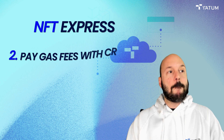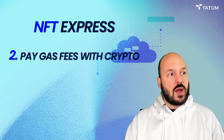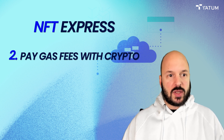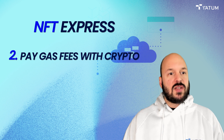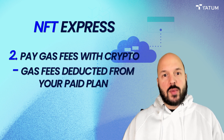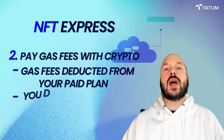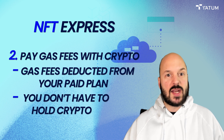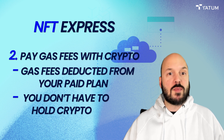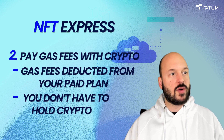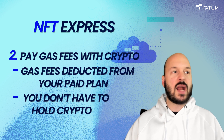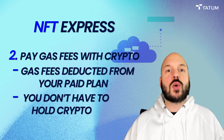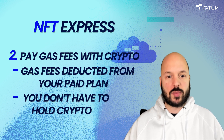Next, buying and holding crypto — how do we get around that? You just pay for a Tatum plan monthly, quarterly, or annually, and your gas fees are deducted as credits from your paid plan. So you don't have to hold crypto or make sure you have enough at different blockchain addresses to pay for your users to mint NFTs. All they do is mint and the credits are deducted from your plan. Our plans start at nine bucks a month and you don't have to worry about any aspect of buying, exchanging, or holding crypto.